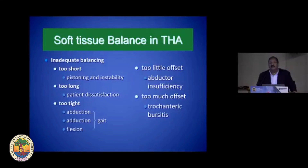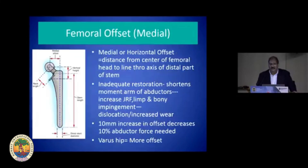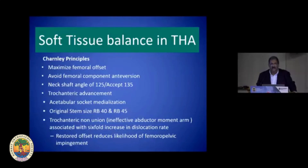Coming to soft tissue balance — this is as crucial in hips as in knees, if not more so. Offset is a very important component of this soft tissue balance. Vertical offset refers to the distance from the lesser trochanter to the femoral head center, crucial for limb length correction. Medial offset is the distance from the center of the femoral head to the line through the axis of the distal part of the stem. Inadequate restoration of femoral offset is not good news for the longevity of the hip. A varus hip will obviously have more offset.